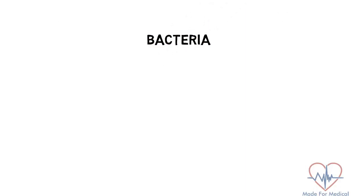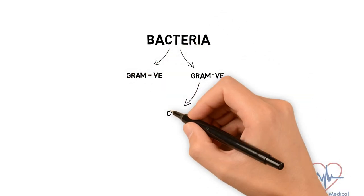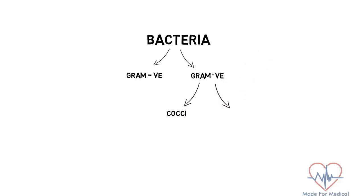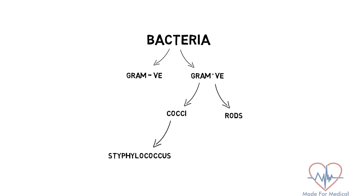Bacteria are divided into two types: gram-positive and gram-negative. Gram-positive bacteria are further classified as cocci and rods. The cocci are then classified as staphylococcus and streptococcus.